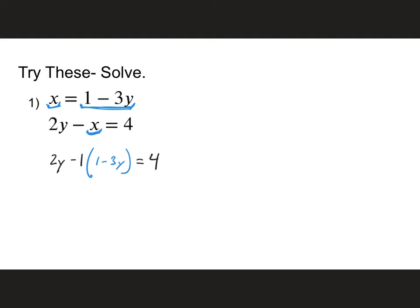And now it's just distributing the negative 1 through. And I get 2y minus 1 plus 3y equals 4. I'll combine my like terms, 2y and 3y, and get 5y minus 1 equals 4. I'll add 1 to both sides. That'll give me 5y on the left-hand side, 5 on the right side.